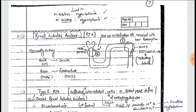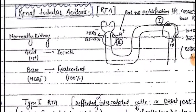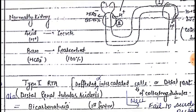In renal tubular acidosis, in a normal kidney, acid (H+ ions) is secreted and bicarbonate ions are reabsorbed from the PCT and collecting tubules. Renal tubular acidosis is of four types.